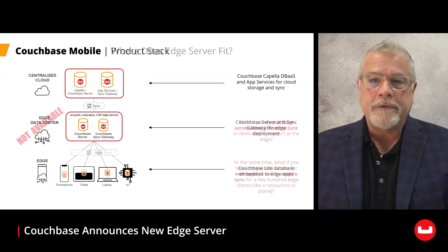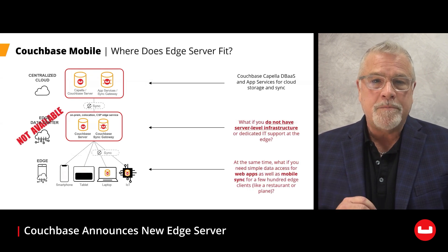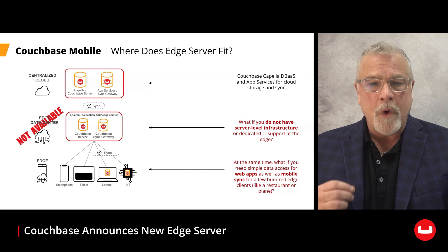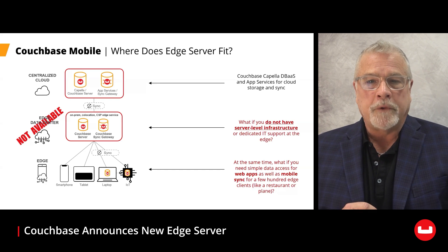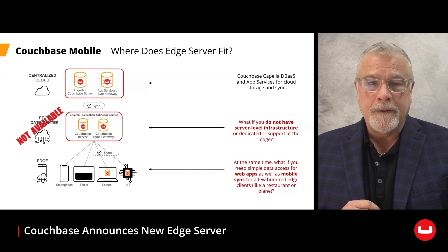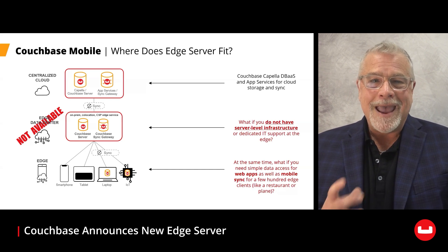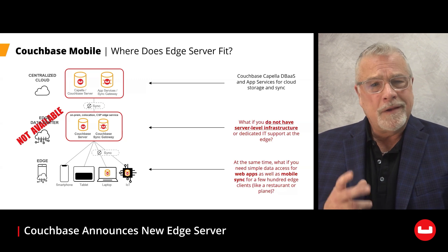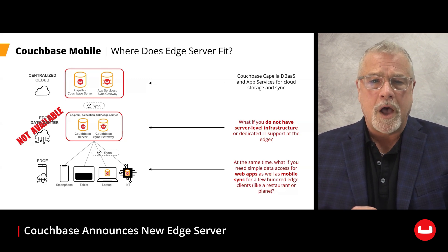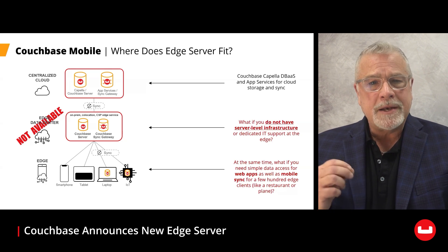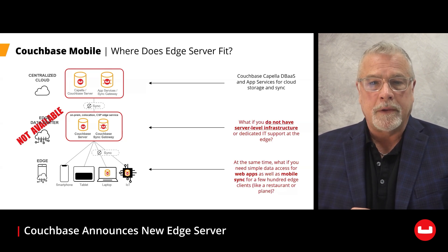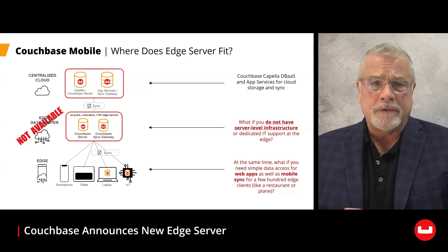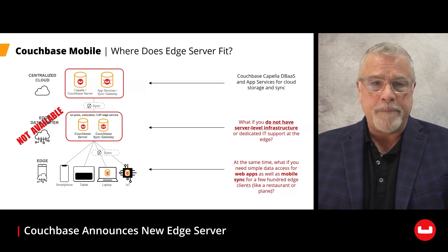But there are cases where there simply isn't enough computing infrastructure at the Edge to run a full-blown multi-node database server cluster. And in some cases, Edge apps, especially those that are read-centric, just need simple data access for a couple of hundred clients in isolation, where an embedded database on device might be overkill. With these restrictions, how do you power always-fast, always-on apps at the Edge?